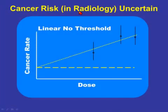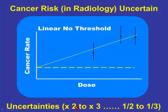There are uncertainties in these risk estimates. You've likely heard of the linear no-threshold model used for estimating radiation risk. Most people, including myself, would say the risk might be two to three times higher than I'm using here, and it might well be two to three times lower. The risk uncertainties are large, and it's even possible the risk might be non-existent. Hopefully one day we'll have a better understanding.